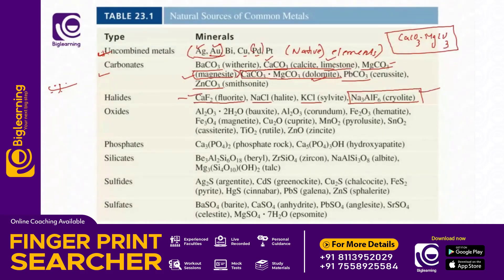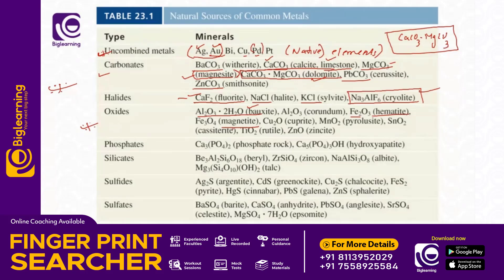Cryolite is important. Oxide ores are very, very important. In metallurgy, aluminum's main ore is bauxite (Al2O3). Iron oxide ores include magnetite (Fe3O4) and hematite (Fe2O3). Iron's major principal ore is hematite. Cuprite (Cu2O) is a copper oxide ore. Pyrolusite (MnO2) is an important manganese oxide. Cassiterite (SnO2) is the ore of tin — cassiterite is important.